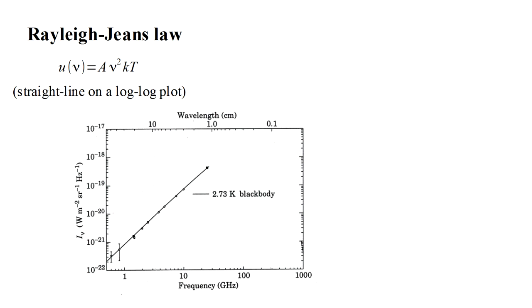In general, this law accurately describes what is observed at low frequencies. We see that it cannot be true in general, however, by continuing to follow the line to arbitrarily high frequencies. At infinite frequency, we would have infinite intensity. Not good. This dilemma is sometimes called ultraviolet catastrophe.